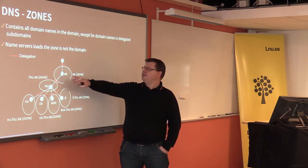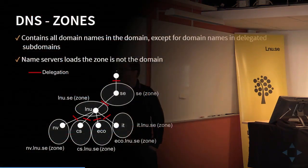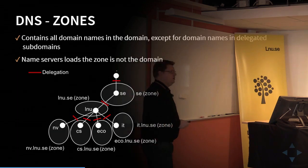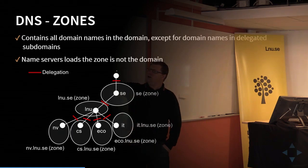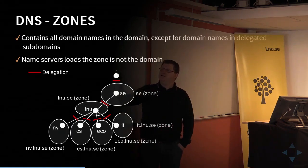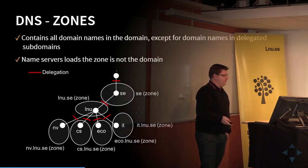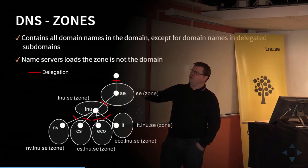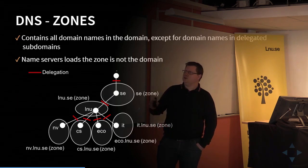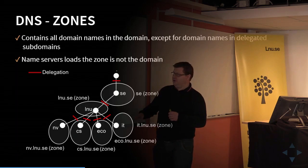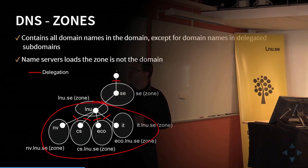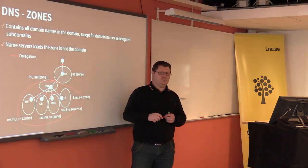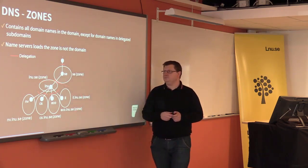We usually use red lines to symbolize a delegation. The .se name servers don't know anything under a specific delegation — they only know which name server knows more about that zone. So if you ask .se for something under CS, it will only hand you off to the LNU name server. These are called zones, and a zone and a domain are not the same thing.